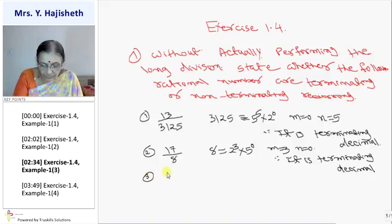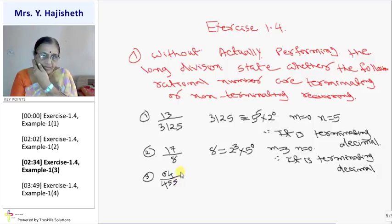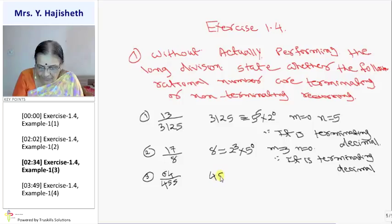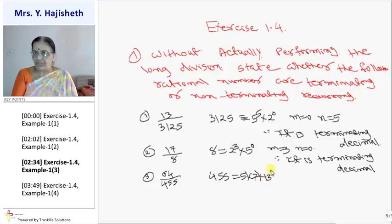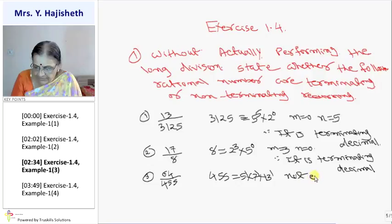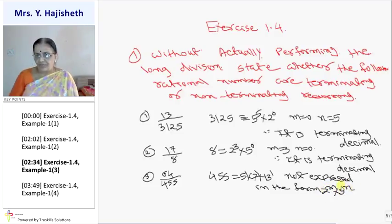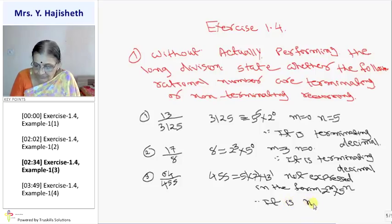Third sum: 64 by 455. The denominator 455 can be expressed as 5 raise to 1 into 7 raise to 1 into 13 raise to 1 — these are the 3 prime factors. So it is not terminating, because Q cannot be expressed in the form 2 raise to m into 5 raise to n, since factors 7 and 13 are also present.